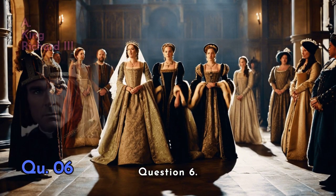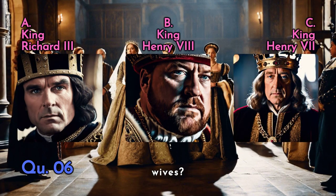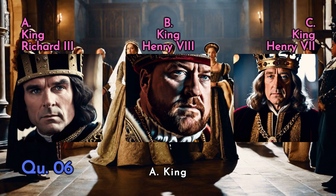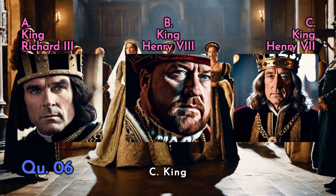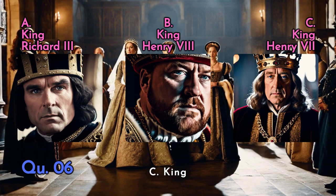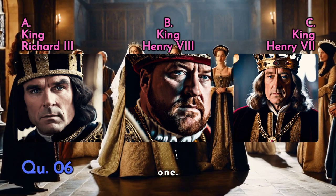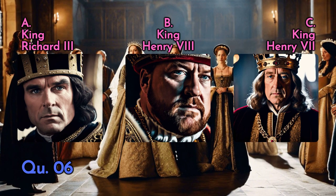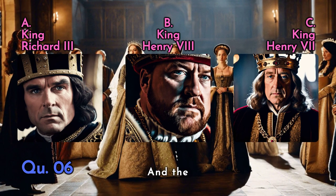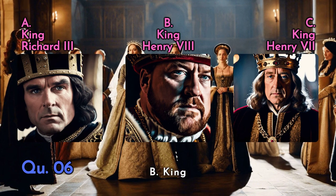Question six: Which British king was famous for having six wives? Was it A) King Richard the Third, B) King Henry the Eighth, or C) King Henry the Seventh? Take your time on this one. The answer is B — King Henry the Eighth.